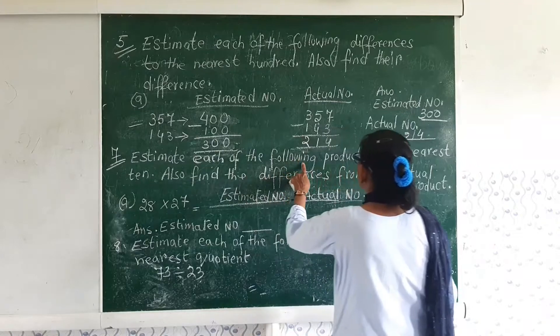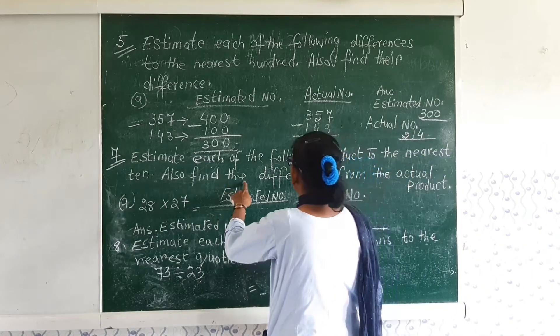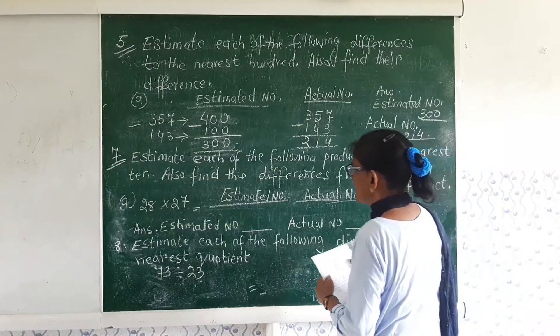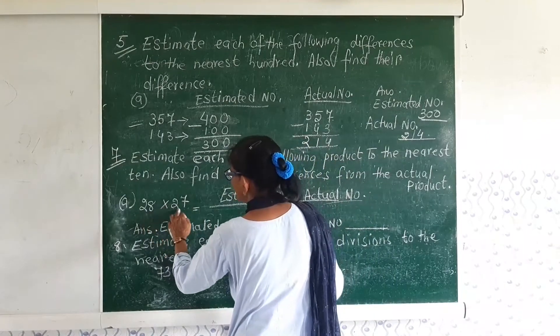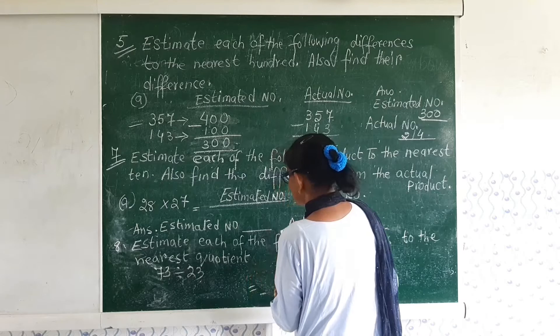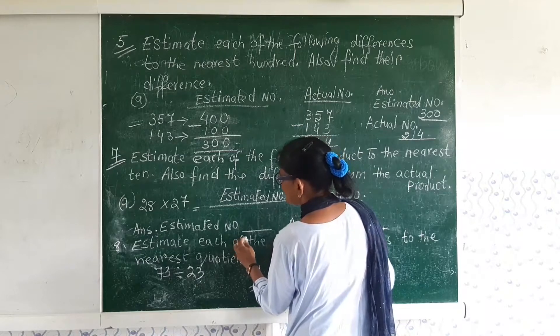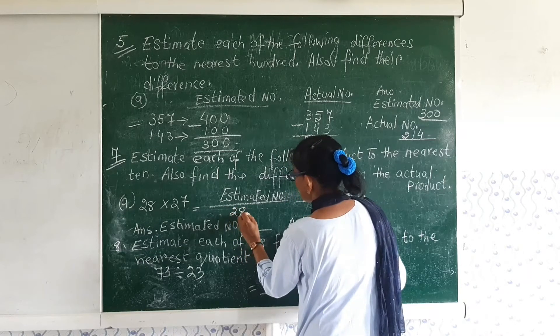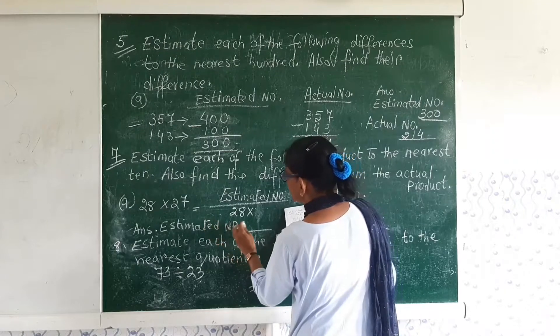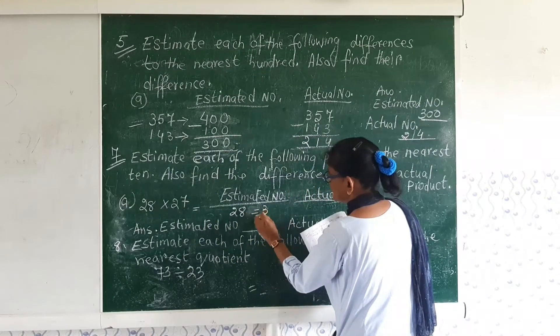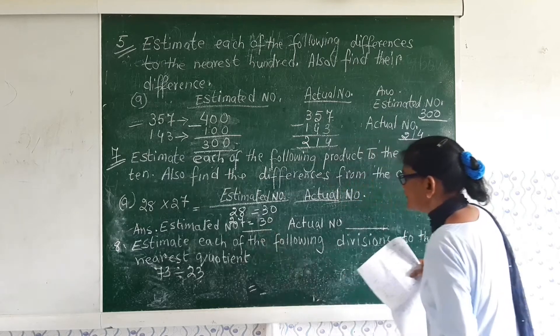So now let's come to sum number 7. Estimate each of the following product to the nearest 10. Also find the differences from the actual product. So the estimated number is 28 into 27. 28 will turn into 30.